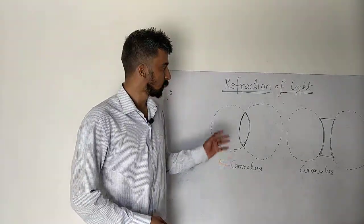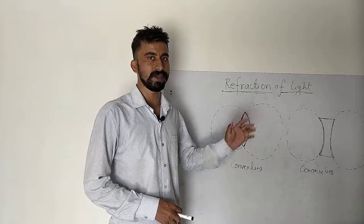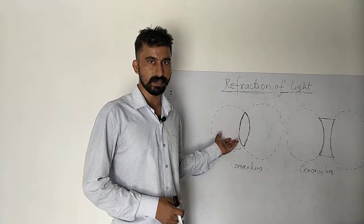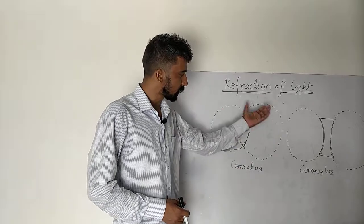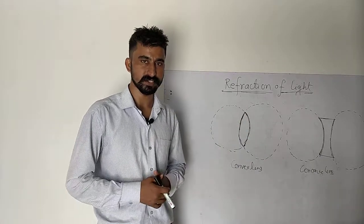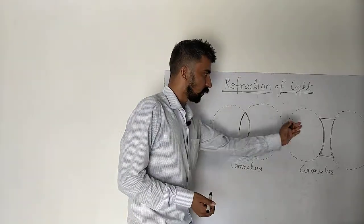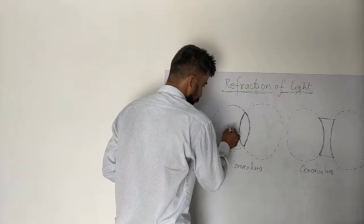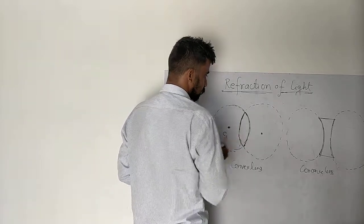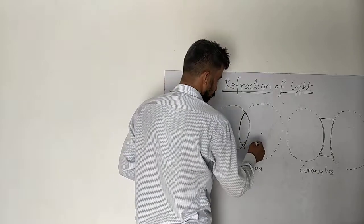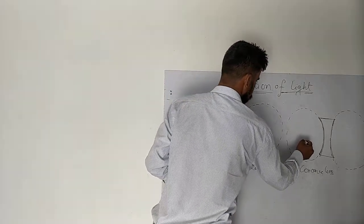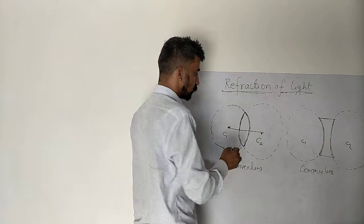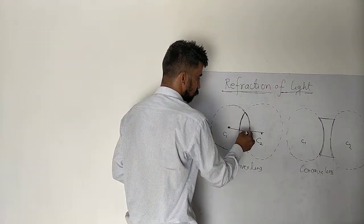Hello students, this is Murari Sharma. Let's cover the topic refraction of light. Last video covered refraction through a glass slab. Now let's cover lenses. A lens is basically a structure formed by two solid transparent spheres. One center of curvature is called C1 and the other is called C2. If you join a line through these two points, it is called the principal axis, and the midpoint is called the pole.